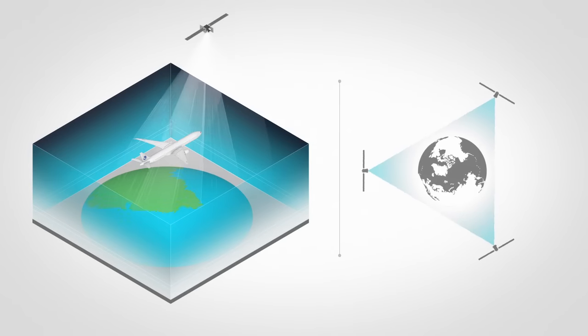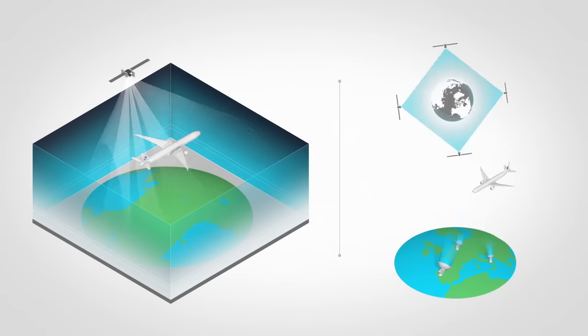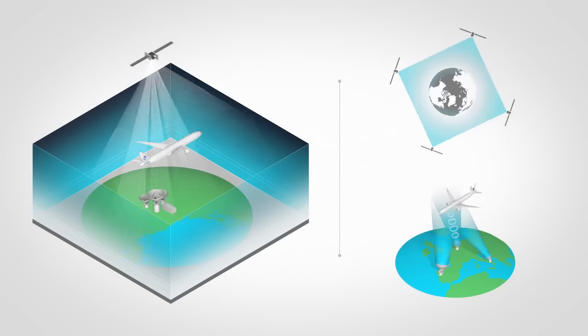Inmarsat will augment this initial constellation with a fourth satellite in 2016 and further capacity enhancements beyond, including air-to-ground networks in Europe.